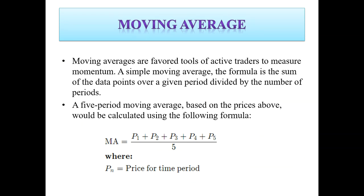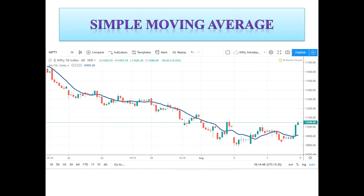First, what is a moving average? Moving averages are favored tools of active traders to measure momentum. For a simple moving average, the formula is the sum of the data points over a given period divided by the number of periods. A five-period moving average based on the prices is calculated from five separate prices divided by the number of periods.